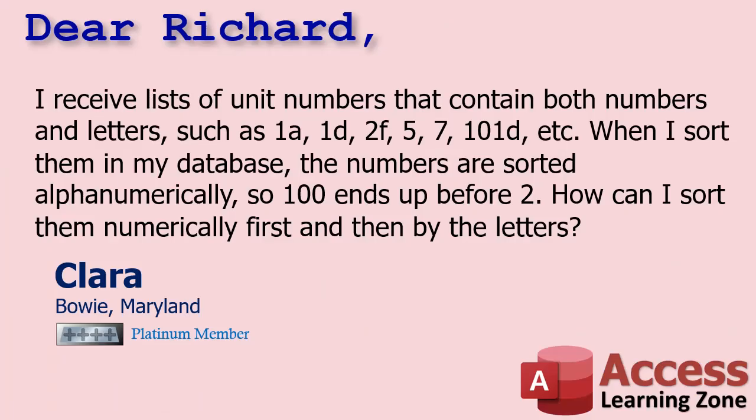Today's question comes from Clara in Bowie, Maryland, one of my platinum members. Clara says: I receive lists of unit numbers that contain both numbers and letters, such as 1A, 1D, 2F, 5, 7, 101D, etc. Note: 101 with a letter O versus a zero — a big difference in computer stuff. When I sort them in my database, the numbers are sorted alphanumerically, so 100 ends up before 2. How can I sort them numerically first and then by letters?